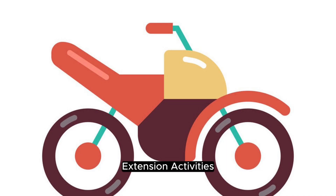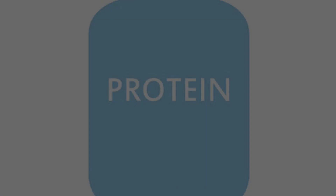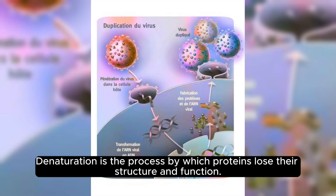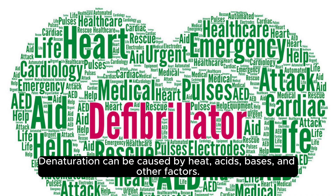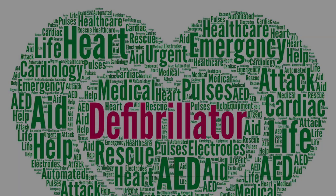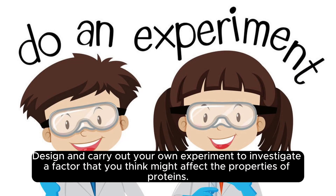Extension Activities: Investigate the denaturation of proteins — the process by which proteins lose their structure and function, caused by heat, acids, bases, and other factors. Investigate the effect of different solvents on the solubility of proteins. Design and carry out your own experiment to investigate a factor that might affect the properties of proteins.